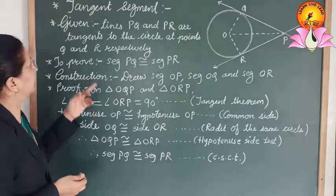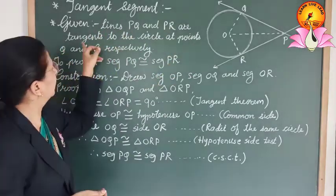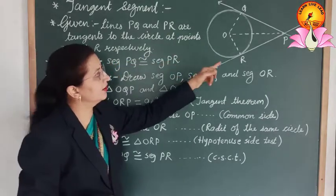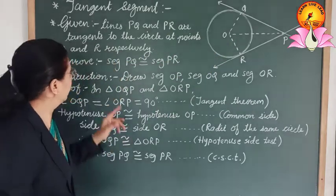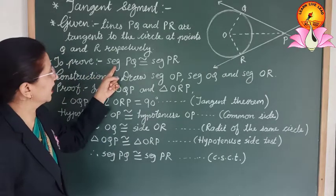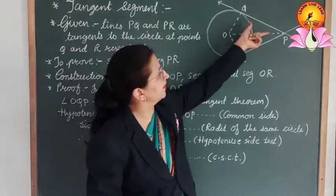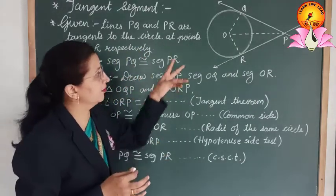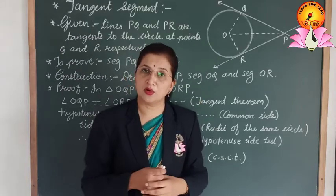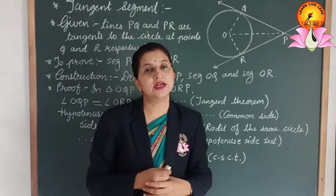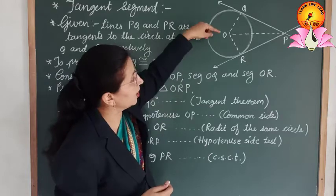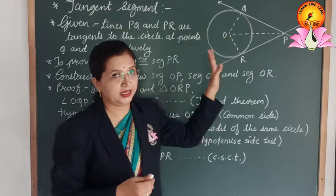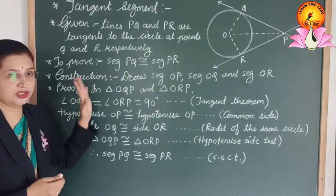Lines PQ and PR are tangent segments to the circle at points Q and R respectively. To prove these tangent segments are congruent, we need to do a construction: draw segments OQ, OR, and OP. After this construction, we get two triangles — triangle OQP and triangle ORP.